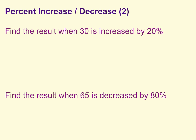So our first example: find the result when 30 is increased by 20%. If 30 is being increased by 20%, we want to figure out what is 20% of 30. So let's find the amount that it's being increased by first. All you have to do is take that 20% as a decimal and multiply it by 30. So do your 0.2 times your 30 and you get 6. So really, we have increased by 6.